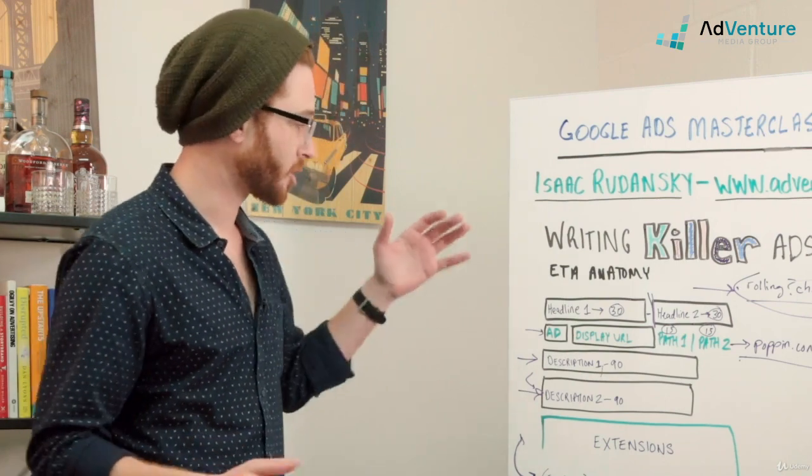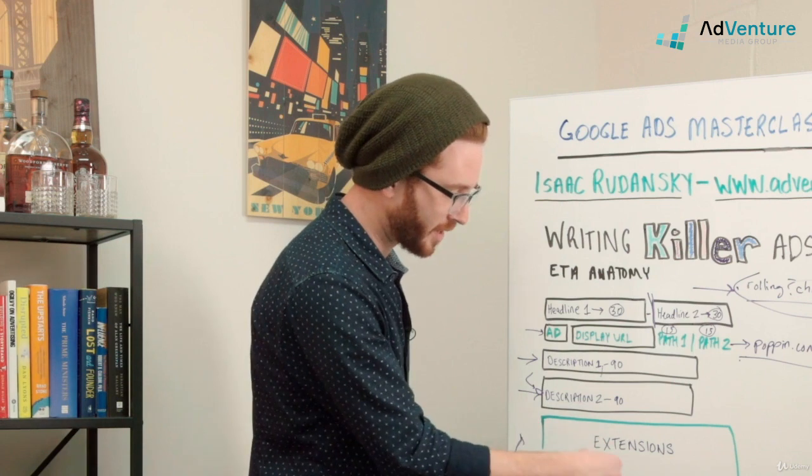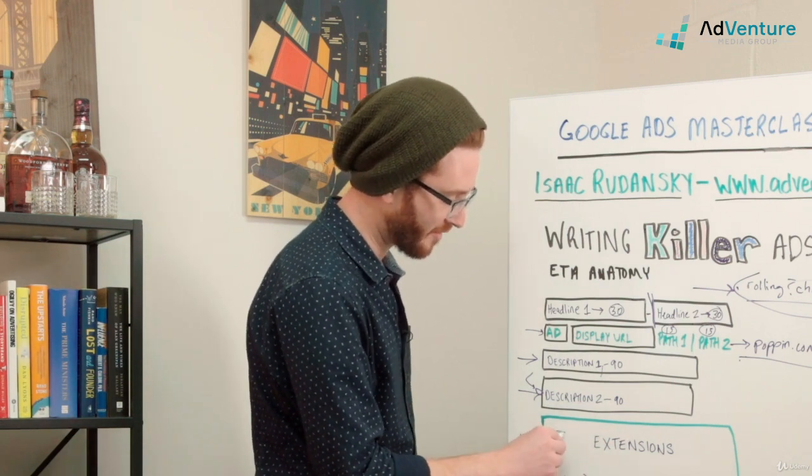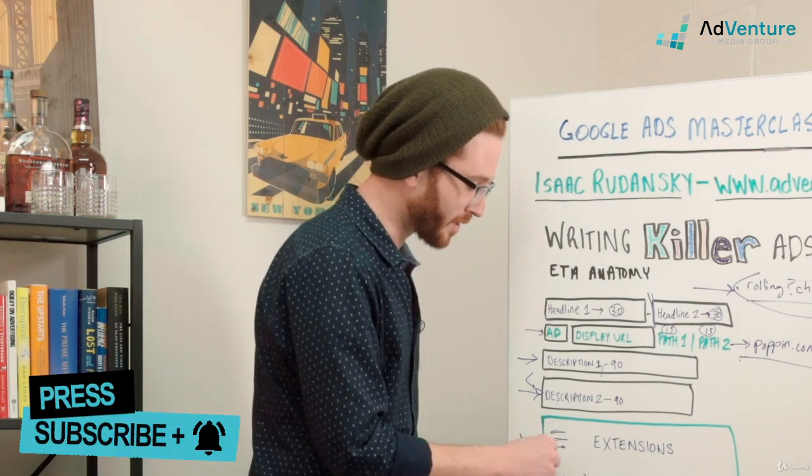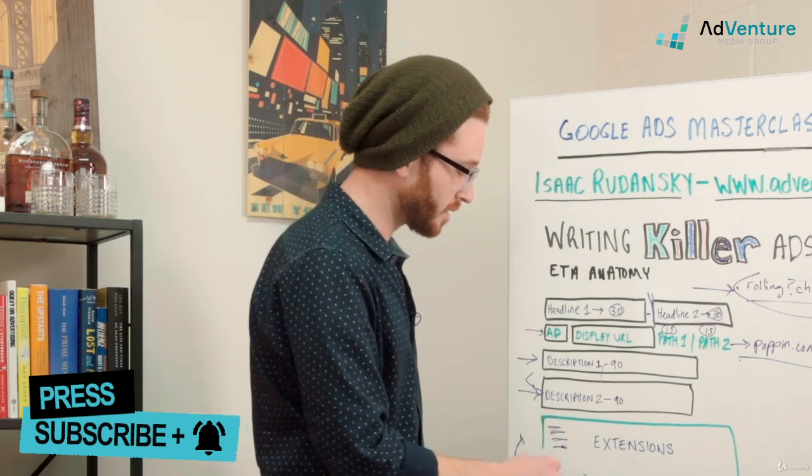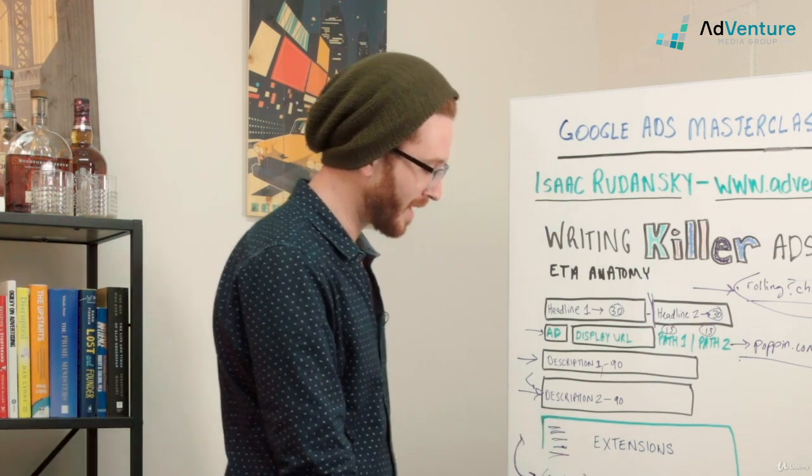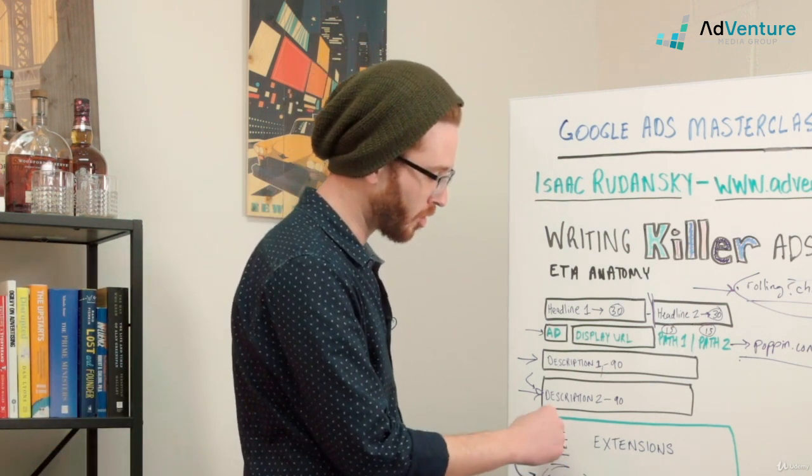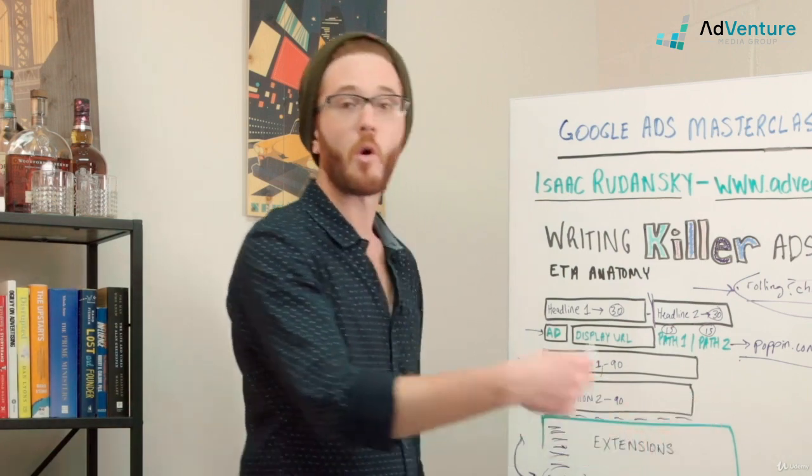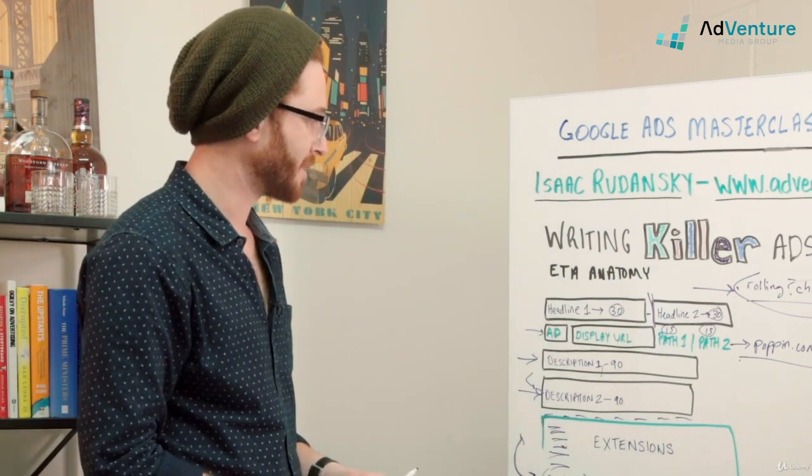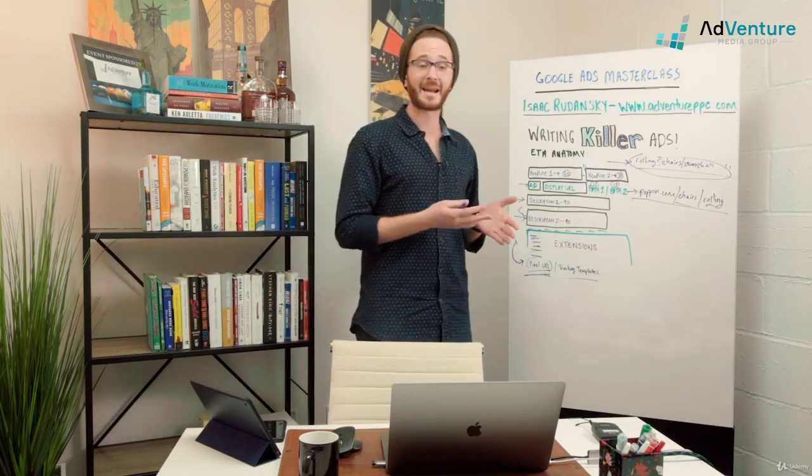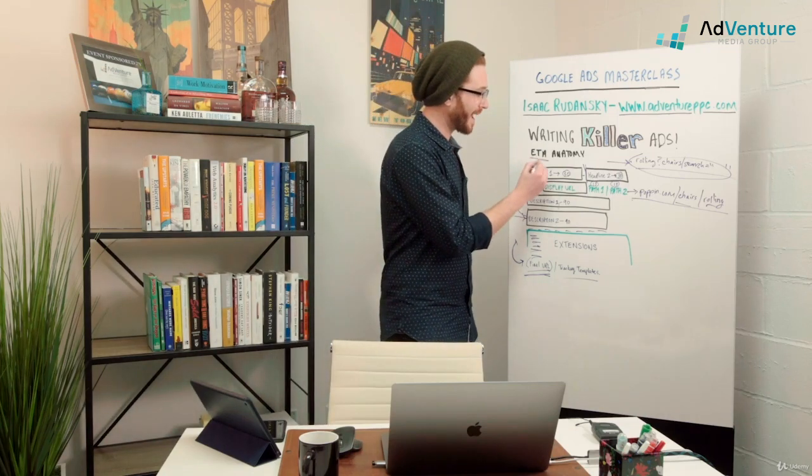Beneath your second description are all your different extensions. If you have location extensions, promotion extensions, price extensions, an app extension, maybe a call extension, your callouts—we know all about extensions because we cover them in enormous detail. So this is the anatomy of a Google Ads expanded text ad, otherwise known as text ads.